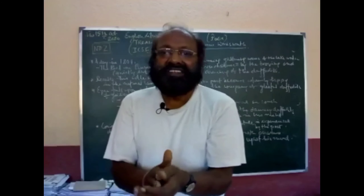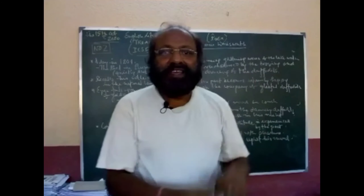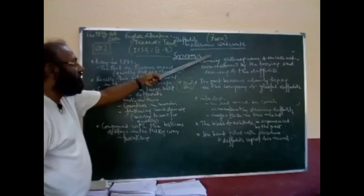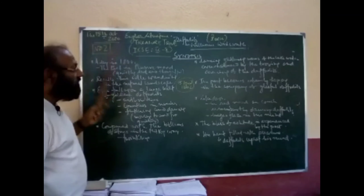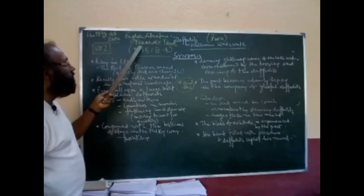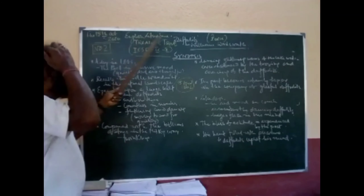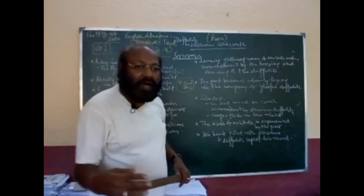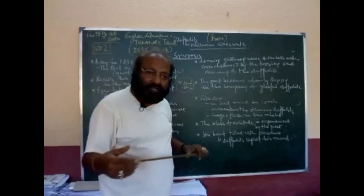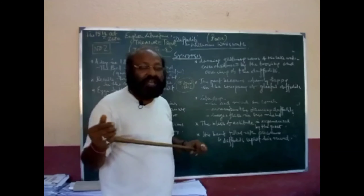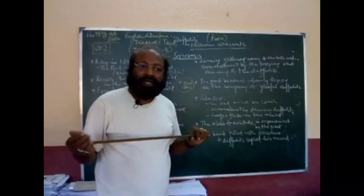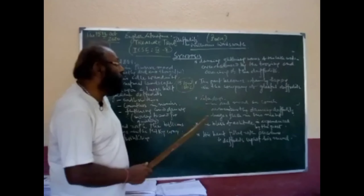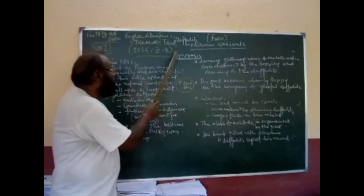The topic, as I have already told you, is 'Daffodil' by William Wordsworth. It is a poem meant for ICSE. The name of the book is Treasure Trove. It is an English literature class — not only for ICSE, although I am presenting this for the students of Bholanath Chakraburti Memorial School. Still, it may be useful to anybody who wants to go through this topic.